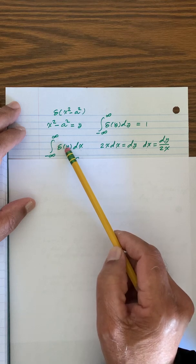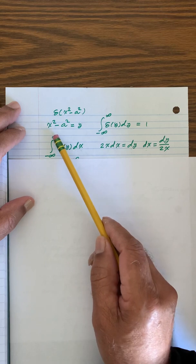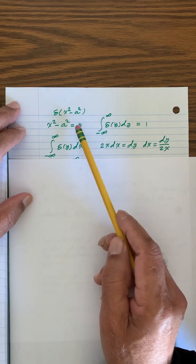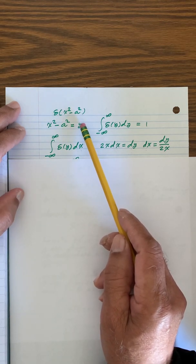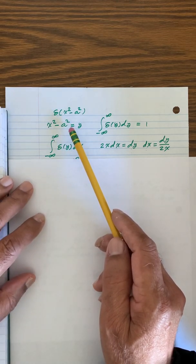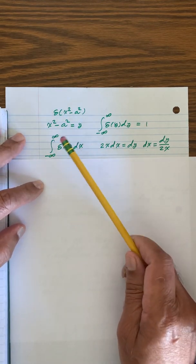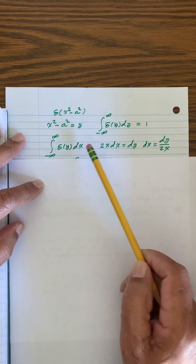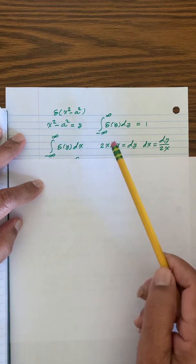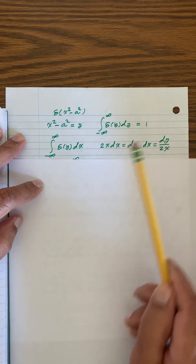Now, delta y dx from minus infinity to infinity, that's what we are going to try to figure out. There's a relationship between y and x. And based on that, we can determine the relationship between dx and dy. And for the differential of this, this is 2x dx, that's dy. So dx equals dy over 2x.